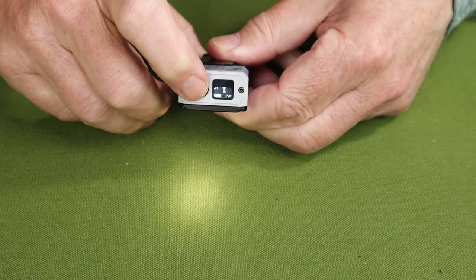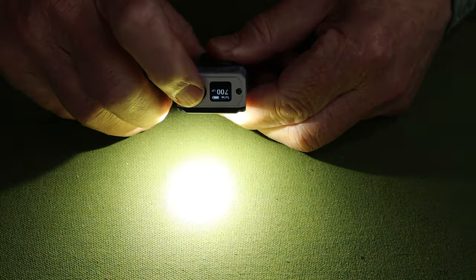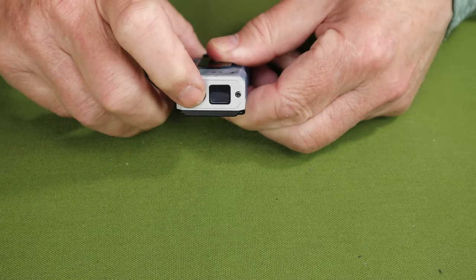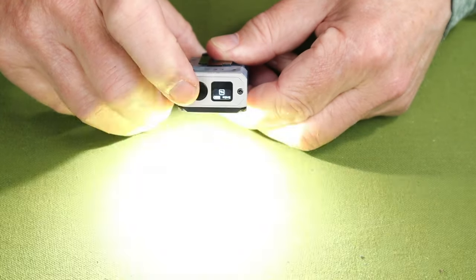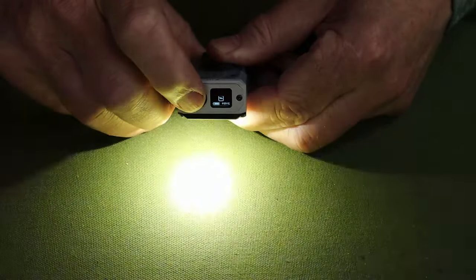Now, if you want to access turbo, double tap. And that is brightened. My camera, of course, adjusts. Now, if you want to access the strobe, it's triple tap. And if you want to access SOS while it's in strobe, triple tap again.